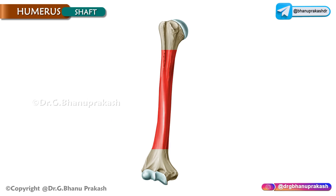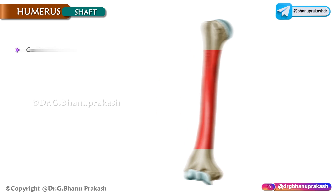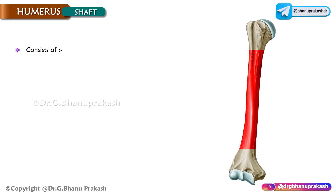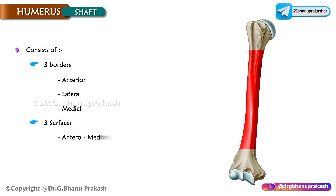The shaft is like a cylinder above but flat and triangular below. It consists of three borders — anterior, lateral, and medial — and three surfaces: anteromedial, anterolateral, and posterior.